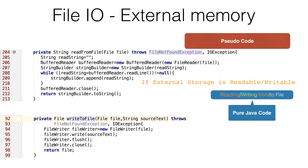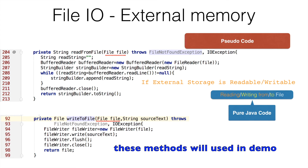If you have a look at the code, the methods have been written in such a way that they take the file as the argument. If you pass a file which appropriately points to an external storage memory, this method should be able to write to and read from that particular file on the external storage.